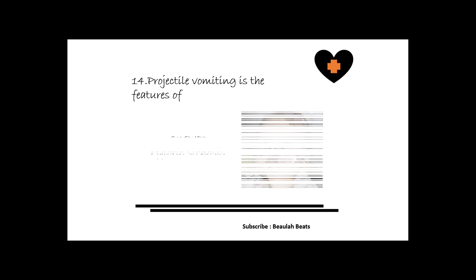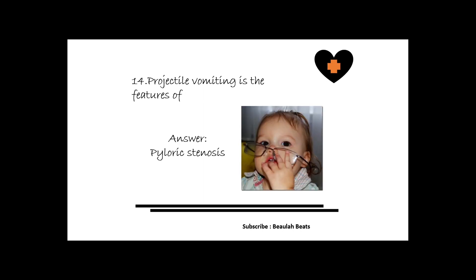The fourteenth question is: projectile vomiting is a feature of what? The answer is pyloric stenosis. Pyloric stenosis is a problem that affects babies between birth and 6 months of age. It causes forceful vomiting that can lead to dehydration. It is the second most common problem requiring surgery in newborns.